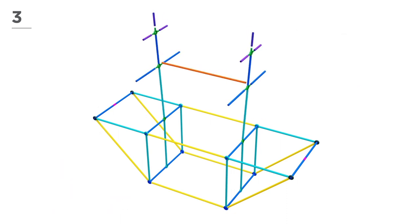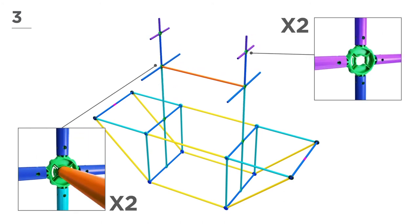Use 4 navy poles, 6 magenta poles, and 1 orange pole to begin to build your flag posts.